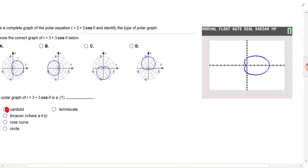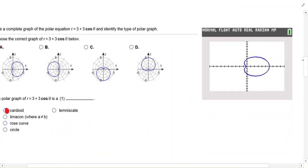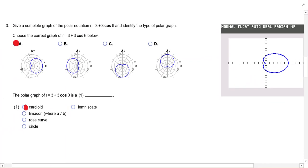Number 3. 3 plus 3 cosine theta. When I put that one in, I got this picture. And you can see that it is a, because it is the only one that is doing that. And that's a cardioid. It looks kind of like a heart. A cardioid.